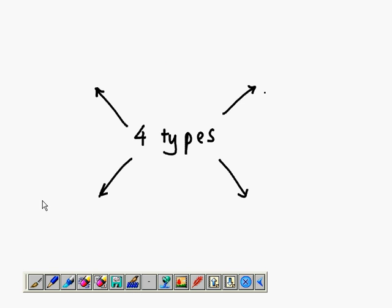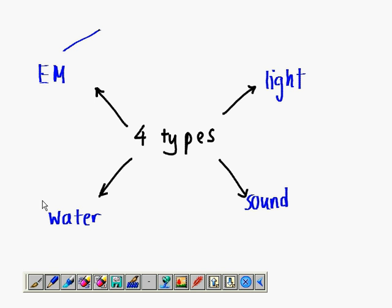Wave, we have four types. The first one is Light, Light Wave, and then we also have Sound Wave, as well as Water Wave, and Electromagnetic Wave, EM Wave. So, these are the four common types of Wave.